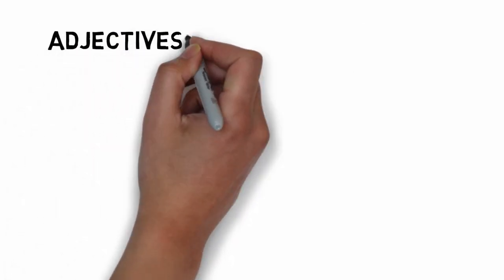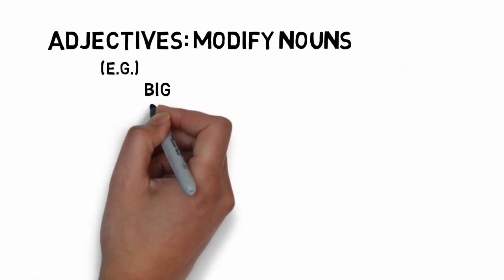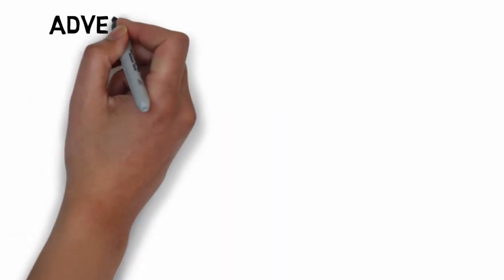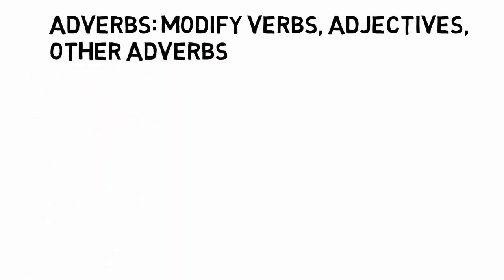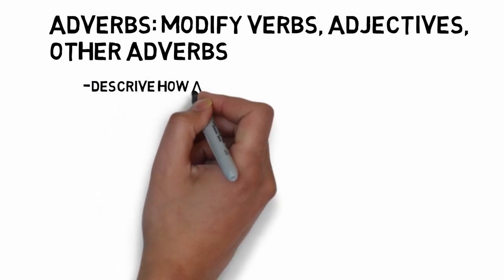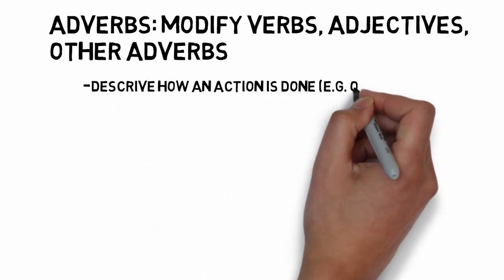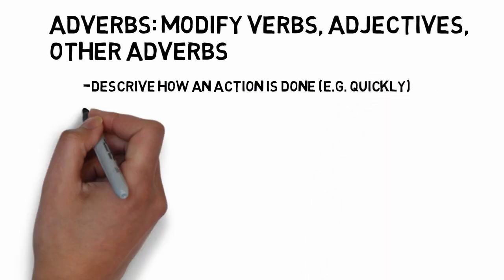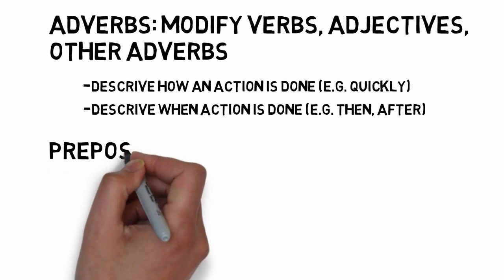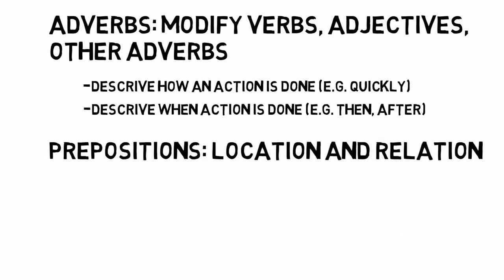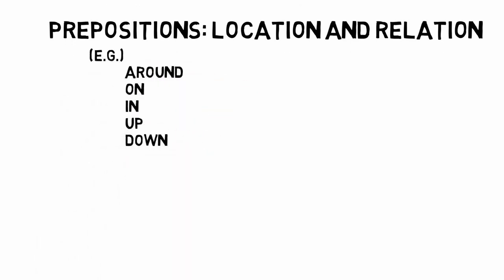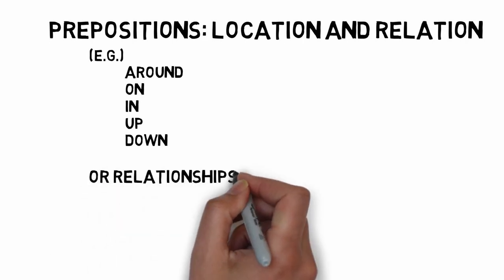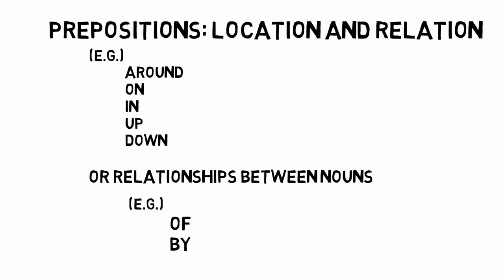Adjectives are words that modify nouns, such as 'big,' 'small,' or 'ugly.' Adverbs modify verbs, adjectives, or other adverbs — they can describe how an action is done, like 'quickly,' or when something is done, like 'then' or 'after.' Prepositions describe locations or spatial relations, like 'around,' 'on,' 'in,' 'up,' or 'down,' and can also describe relationships between nouns, like 'of' or 'by.'